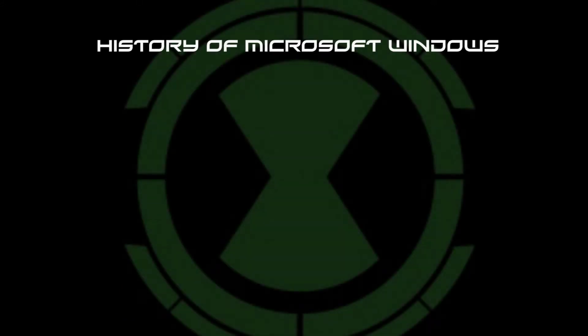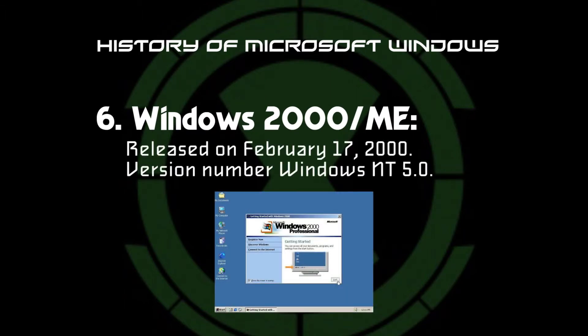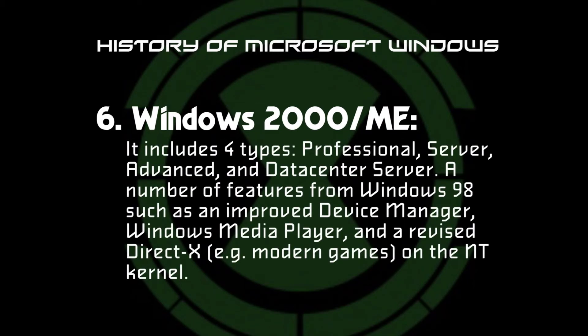We move ahead to the next operating system from Windows 2000 and above. Microsoft released Windows 2000 on February 17, 2000. It has the version number Windows NT 5.0. Windows 2000 has had four official service packs: Professional, Server, Advanced Server, and Data Center Server. A number of features from Windows 98 were incorporated also, such as an improved device manager, Windows Media Player, and a revised DirectX that made it possible for the first time for many modern games to work on the NT kernel.